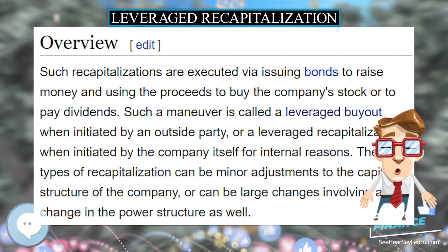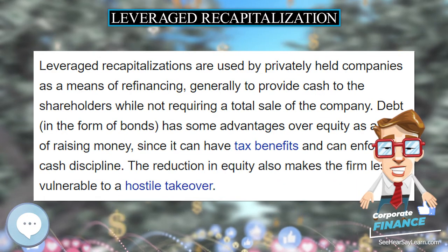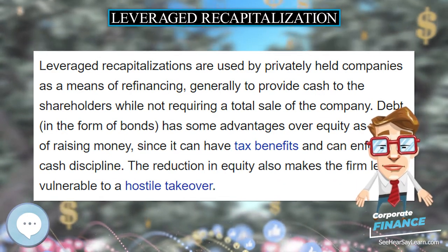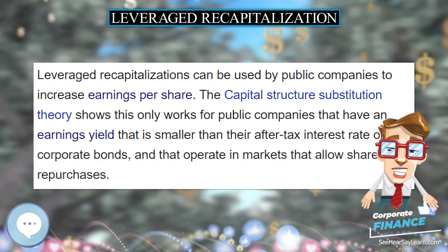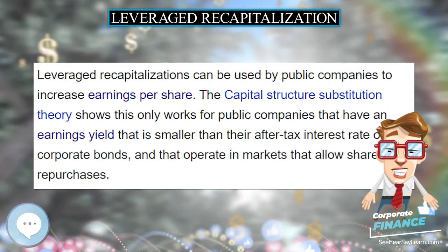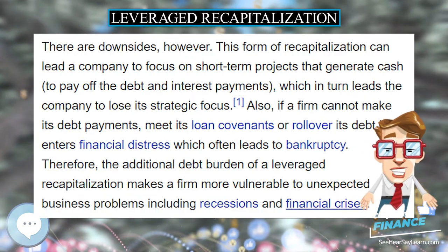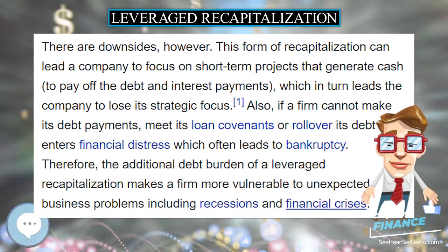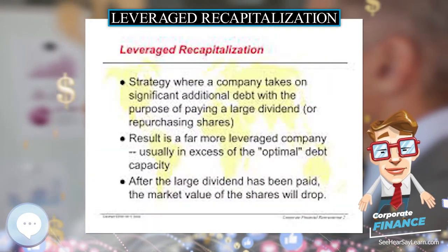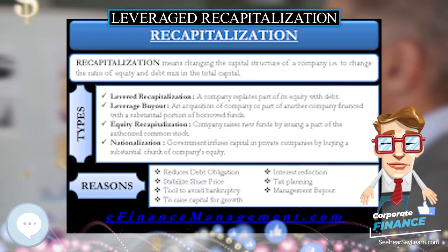The reduction in equity also makes the firm less vulnerable to a hostile takeover. Leveraged recapitalizations can be used by public companies to increase earnings per share. The capital structure substitution theory shows this only works for public companies that have an earnings yield smaller than their after-tax interest rate on corporate bonds and that operate in markets that allow share repurchases.